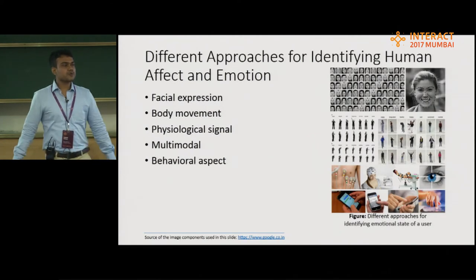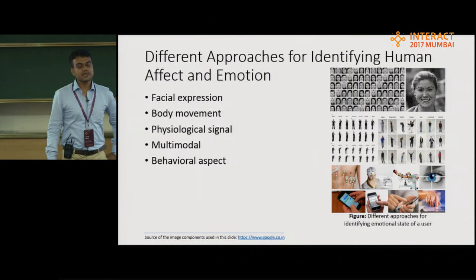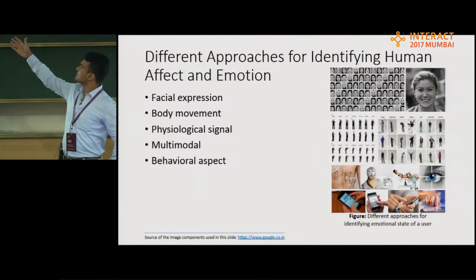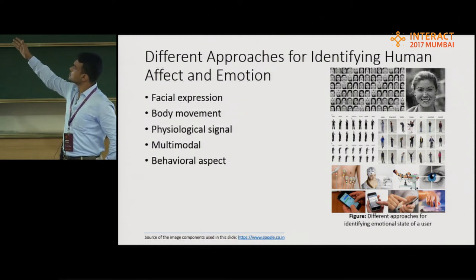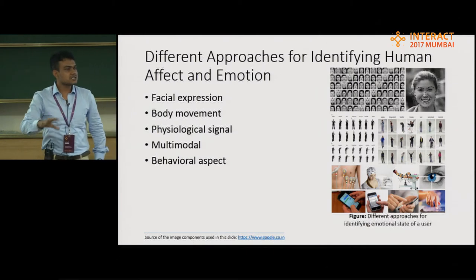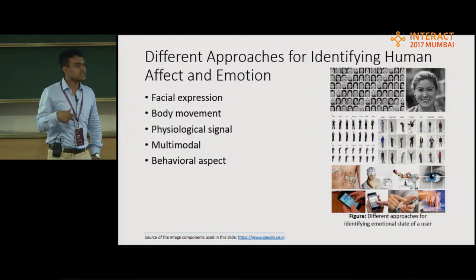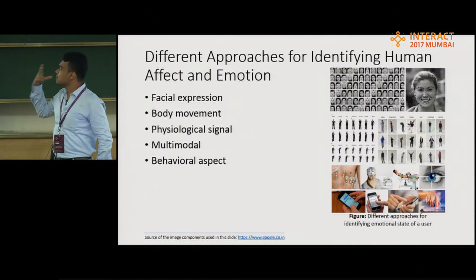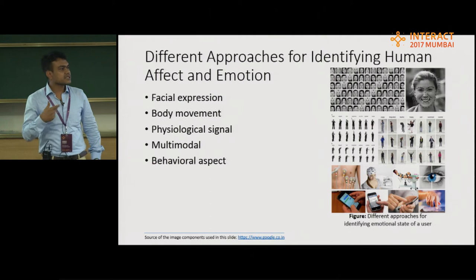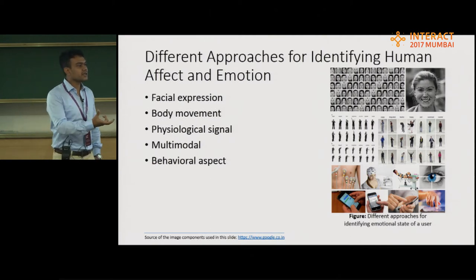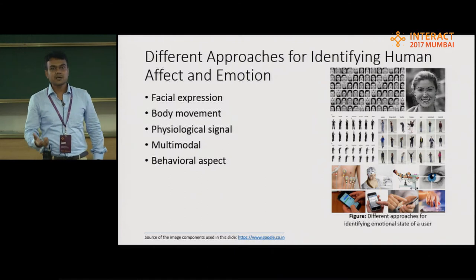There are different approaches to identify human affect and emotion. First is emotion identification through facial expression. This is a well-established theory — we can identify emotional state from facial expression. But in this case, computer vision and image processing are required, which are not always possible for low-end, low-cost, small handheld mobile devices.